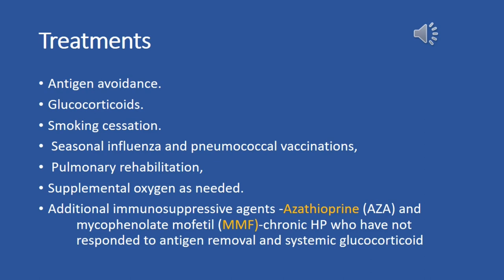Smoking cessation is important in hypersensitivity pneumonitis, as smoking can exacerbate lung inflammation and damage. Seasonal influenza and pneumococcal vaccinations are recommended to reduce the risk of respiratory infections, which can worsen hypersensitivity pneumonitis. Pulmonary rehabilitation programs may improve exercise tolerance, manage symptoms, and enhance quality of life. Supplemental oxygen therapy may be necessary for patients with hypoxemia to improve oxygenation and relieve symptoms.